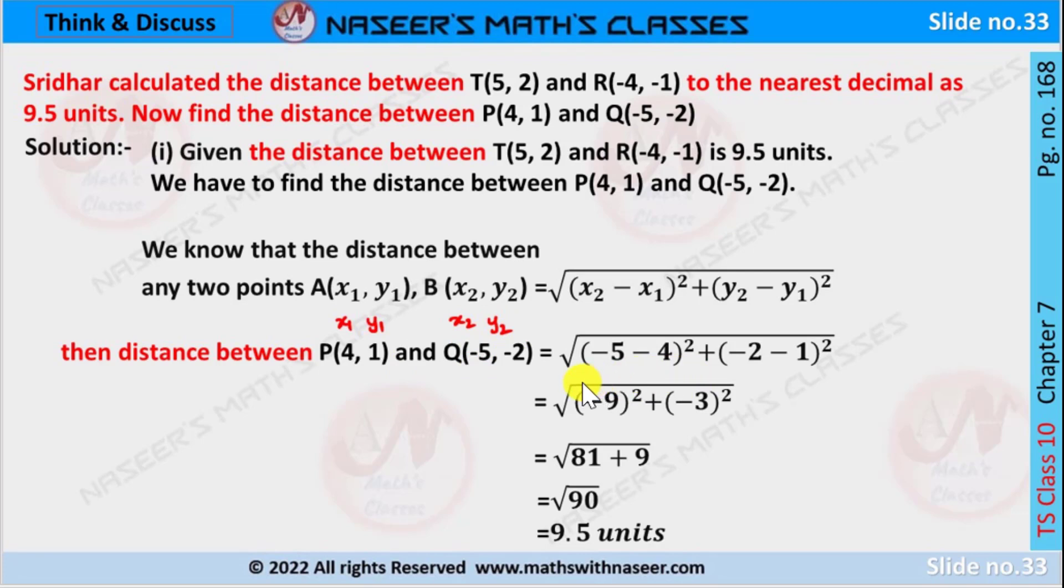Now we substitute these values, then we can write it as square root of (-5 - 4)² plus (-2 - 1)². -5 - 4 is -9, -2 - 1 is -3.